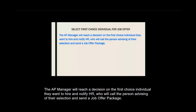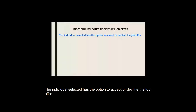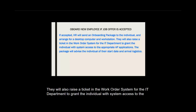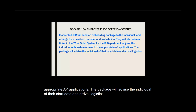The AP manager will reach a decision on the first choice individual they want to hire and notify HR, who will call the person advising of their selection and send a job offer package. The individual selected has the option to accept or decline a job offer. If accepted, HR will send an onboarding package to the individual and arrange for a desktop computer and workstation. They will also raise a ticket in the work order system for the IT department to grant the individual system access to the appropriate AP applications. The package will advise the individual of their start date and arrival logistics.